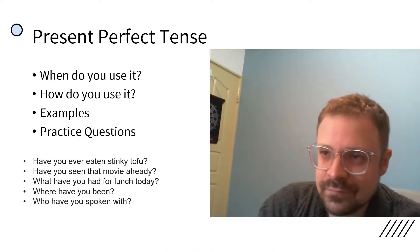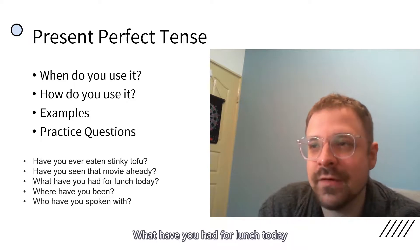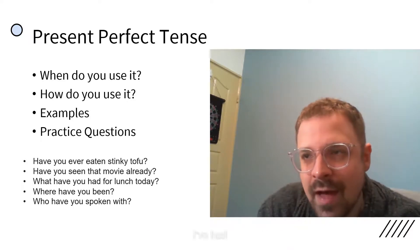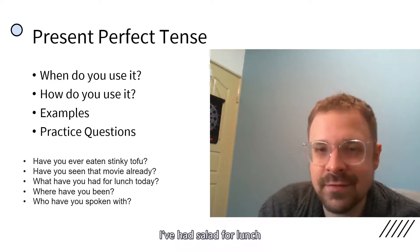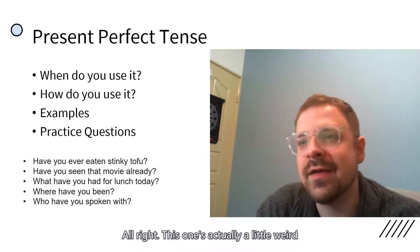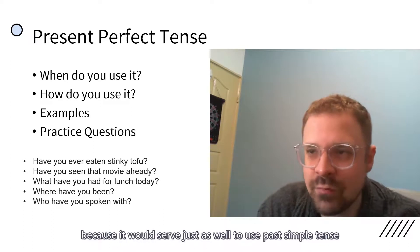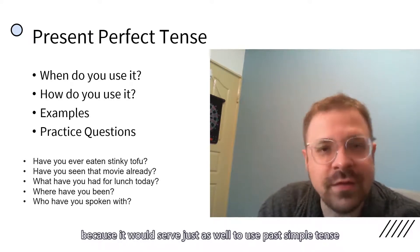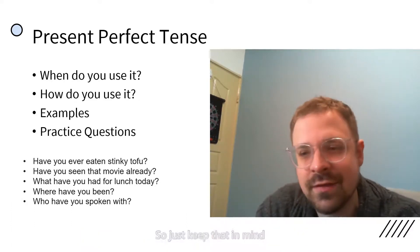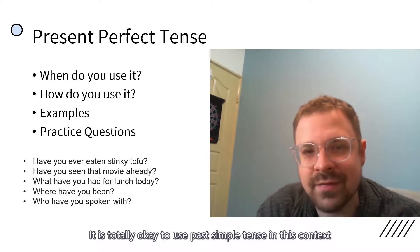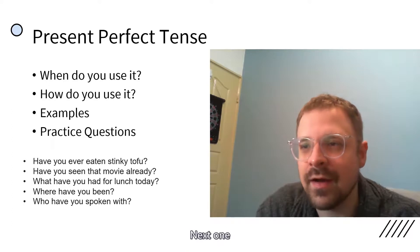Next one. What have you had for lunch today? I've had pizza for lunch. I've had stinky tofu for lunch. I've had salad for lunch. All right. This one's actually a little weird because it would serve just as well to use past simple tense, which we haven't learned yet. So just keep that in mind. It is totally okay to use past simple tense in this context. What did you eat for lunch today?